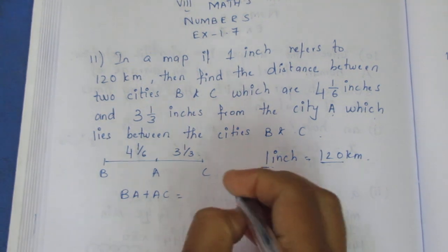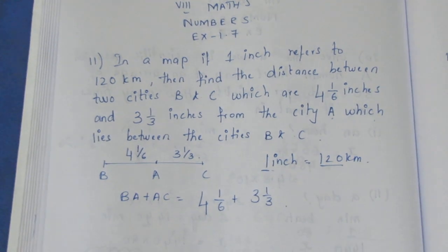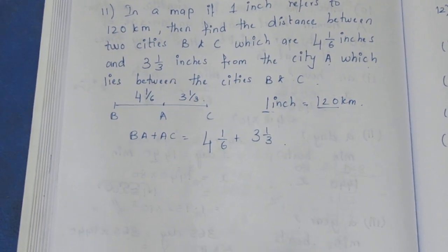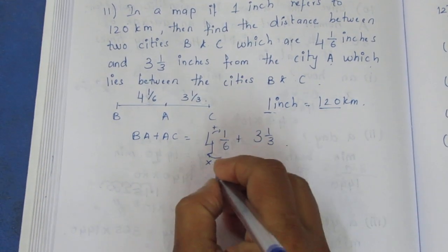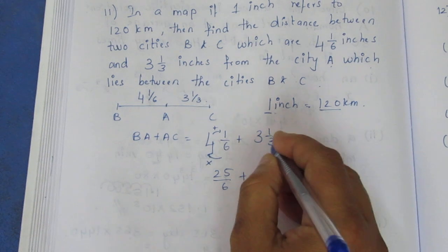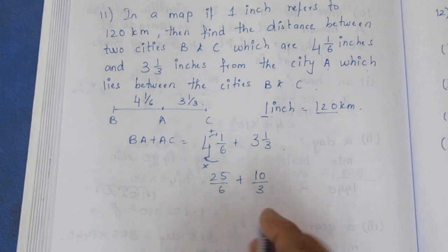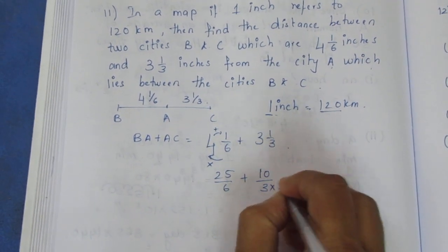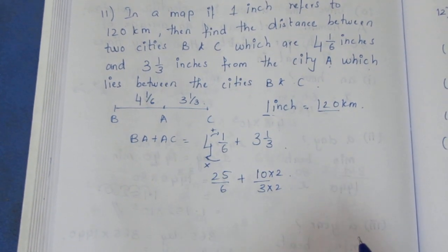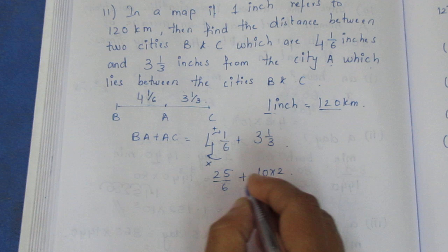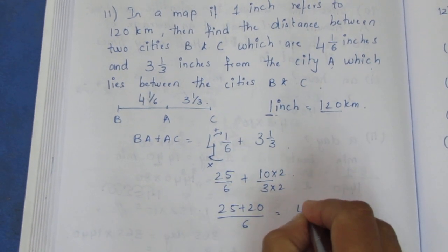Adding the two distances: 4 and 1/6 is 25/6, plus 3 and 1/3 is 10/3. To add, we find the common denominator, which is 6. So 10/3 becomes 20/6. Therefore, 25/6 plus 20/6 equals 45/6 inches.